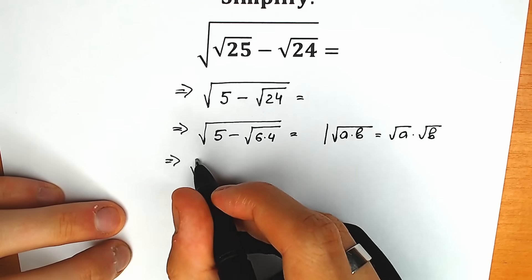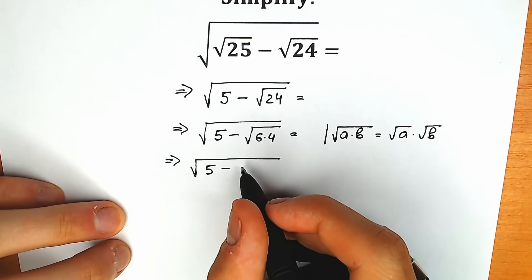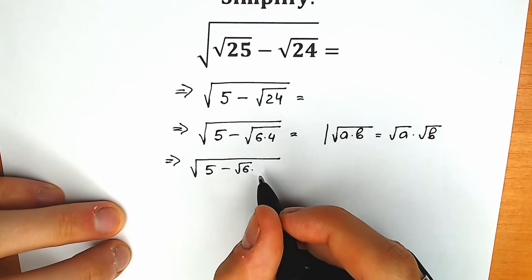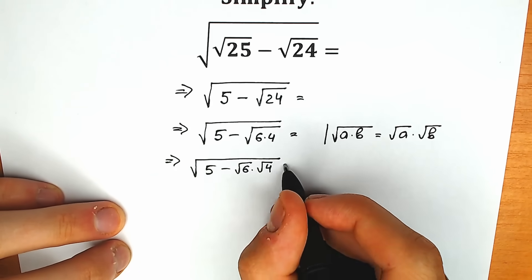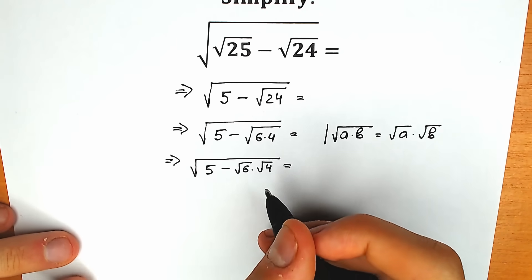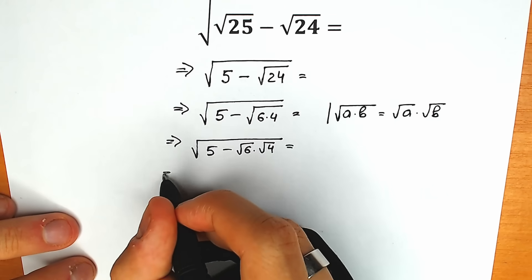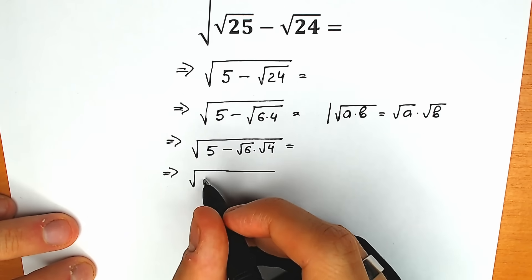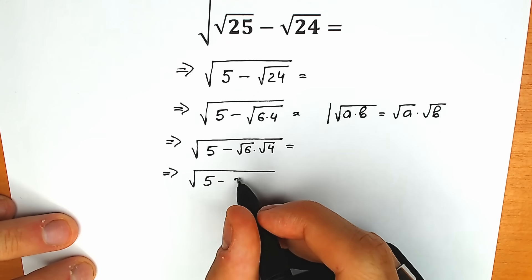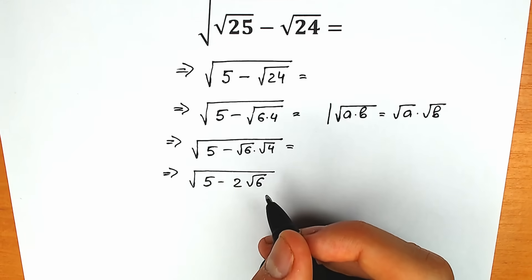As a result, we have square root of 5 minus square root of 6 times square root of 4. Everyone knows that square root of 4 equals 2, so our expression becomes square root of 5 minus 2 times square root of 6.